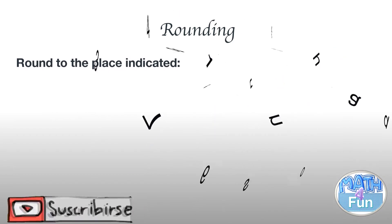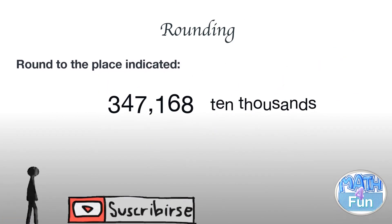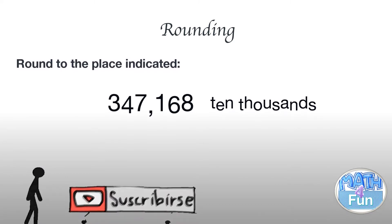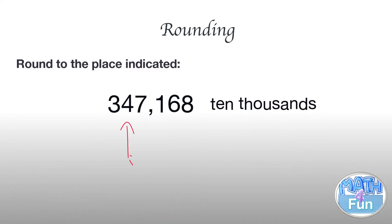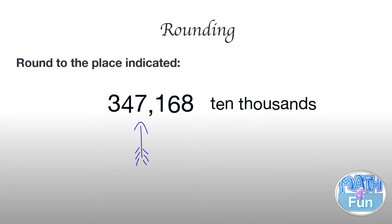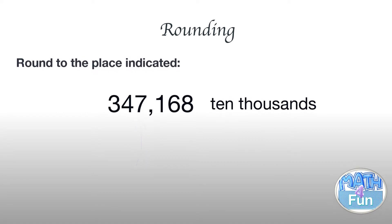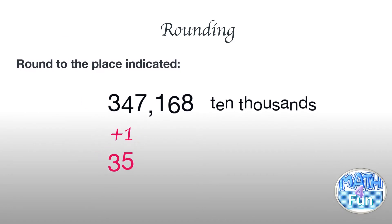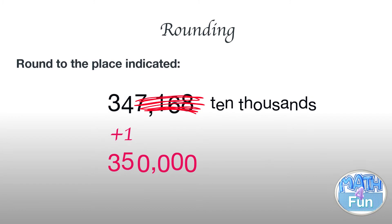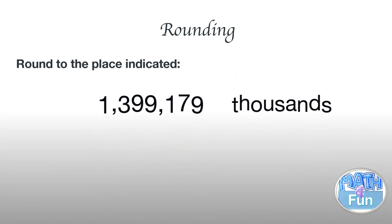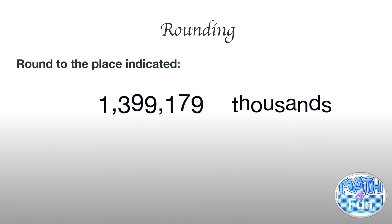The second question: we have 347,168 and they want us to round it to the nearest ten thousands. The ten thousands place is 4. We look at the digit to the right, which is 7. Is 7 five or more? Yes. So we add 1 to the 4, it becomes 5, and we change the other digits to zeros. It becomes 350,000.